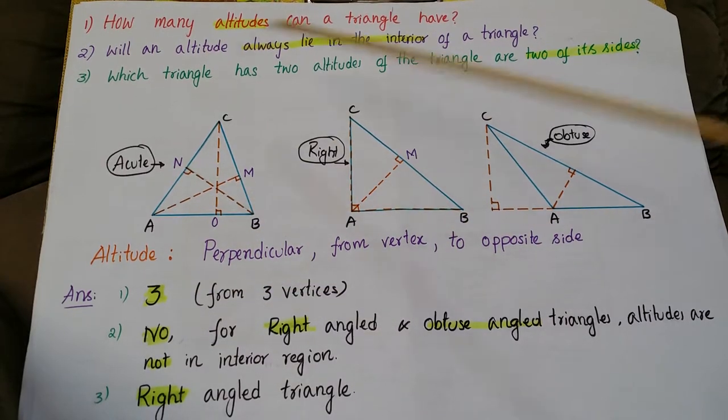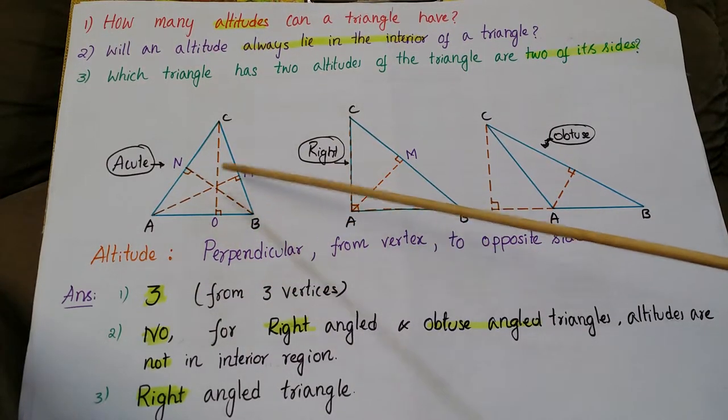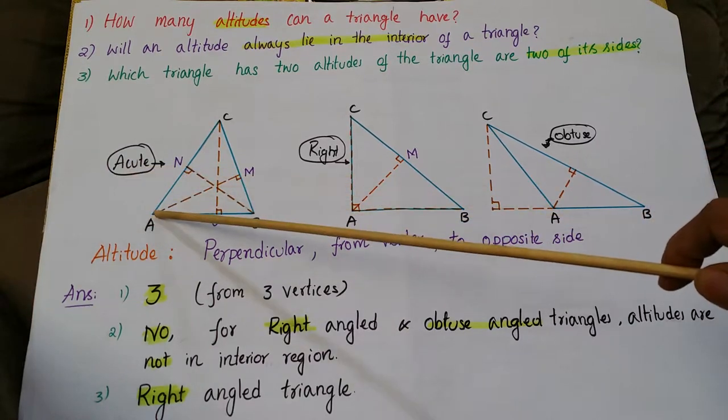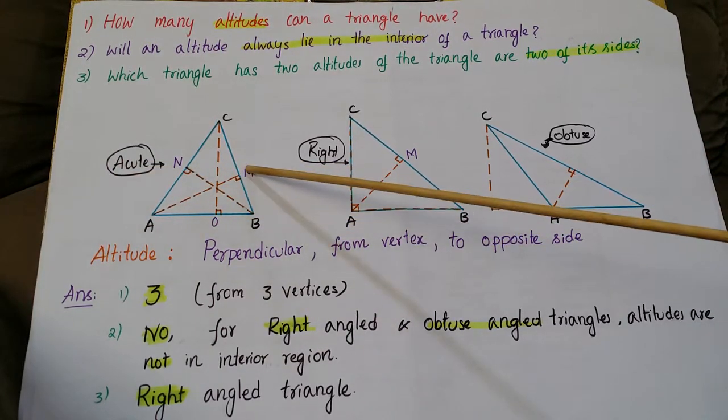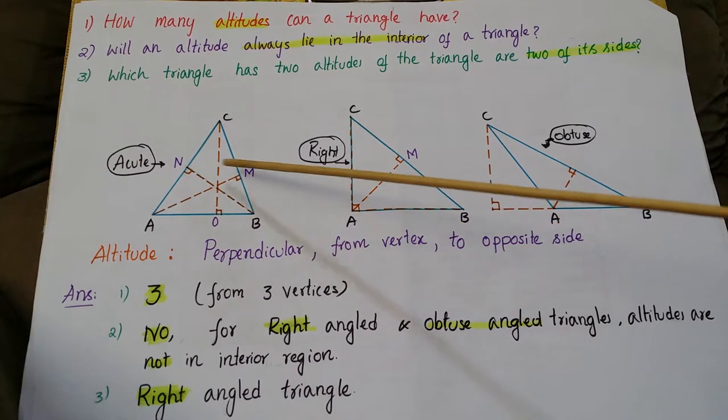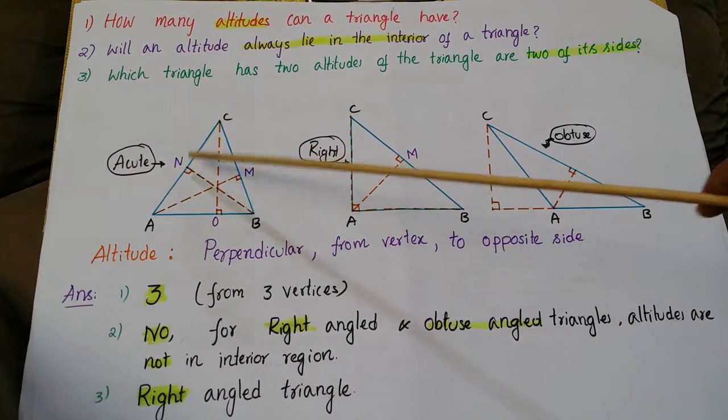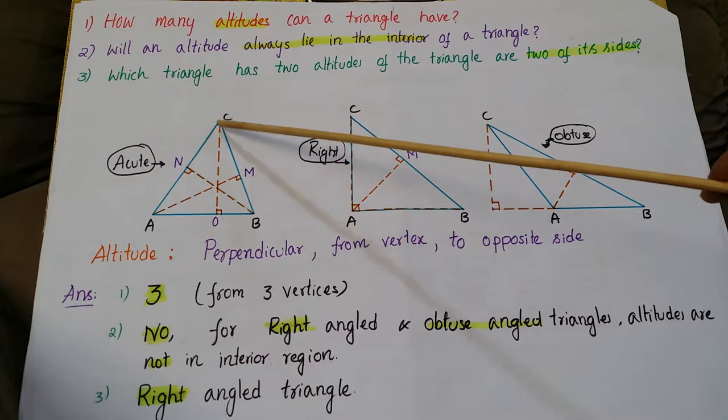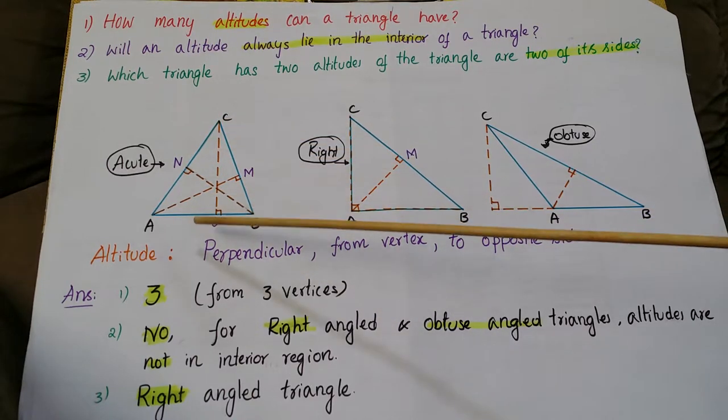For all triangles, see here this is acute. We can draw three altitudes from vertex A to perpendicular here. M is an altitude. From B, this is perpendicular to opposite side. BN is the altitude. CO is the altitude.